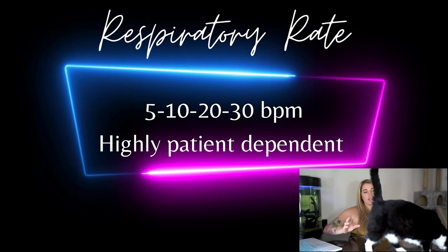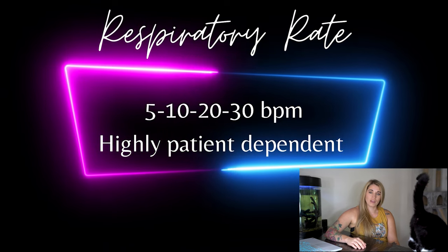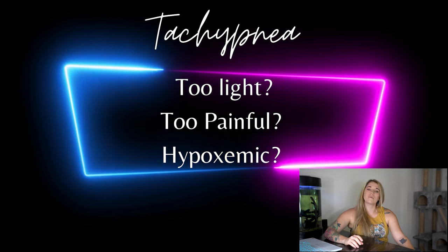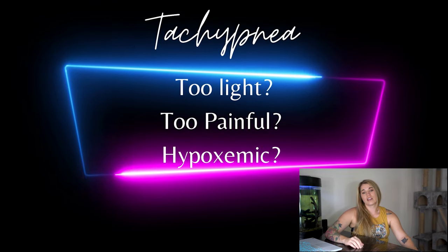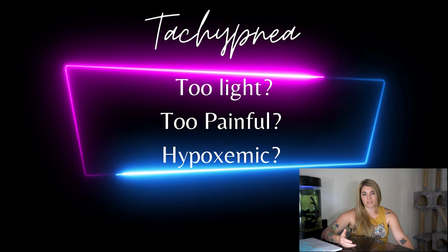A normal respiratory rate for an anesthetized patient is usually between 10 and 20 breaths per minute, although very fit or very large patients may have inherently lower rates, down to even 5. As long as our patient is respirating well and the rest of our vitals are normal, we can tolerate these low respiratory rates. Tachypnea, or a very fast respiratory rate, may be a sign that the patient is in too light of an anesthetic plane, because they may be responding to the painful stimuli of the procedure.